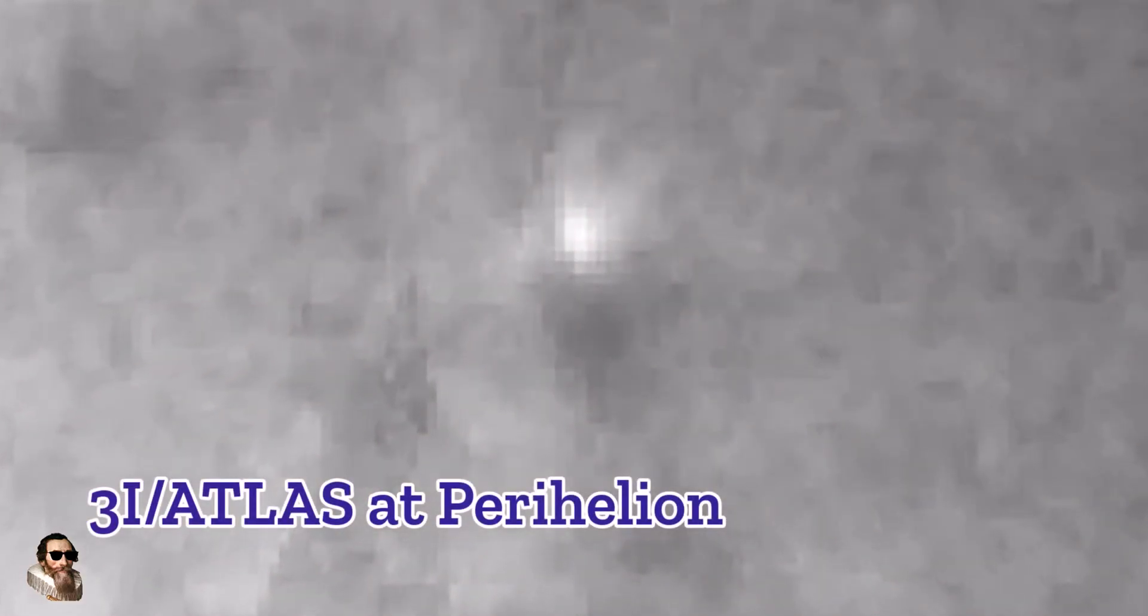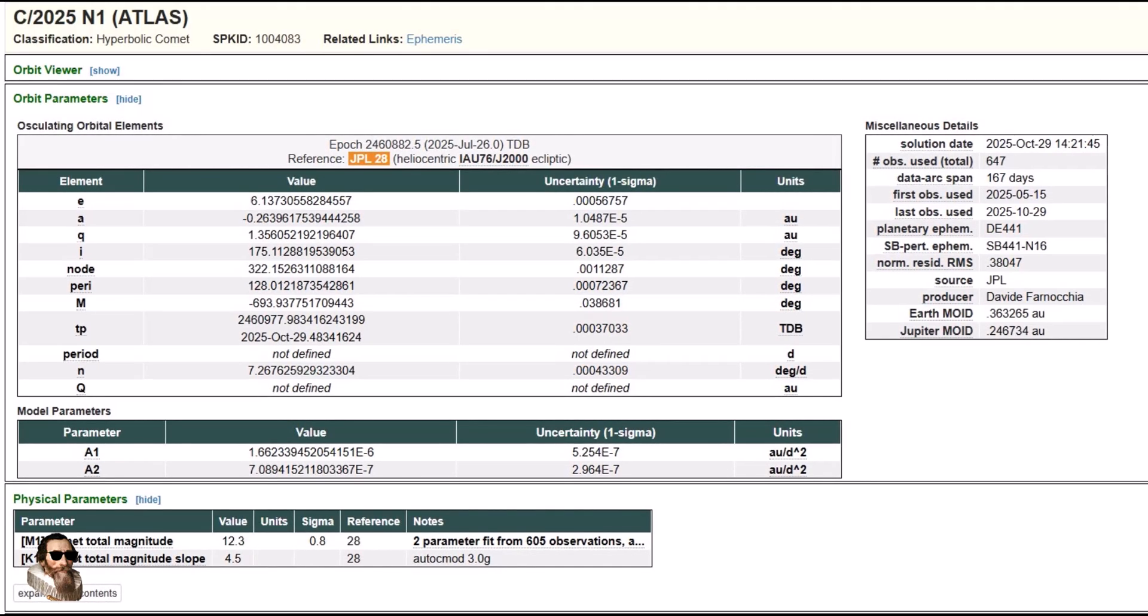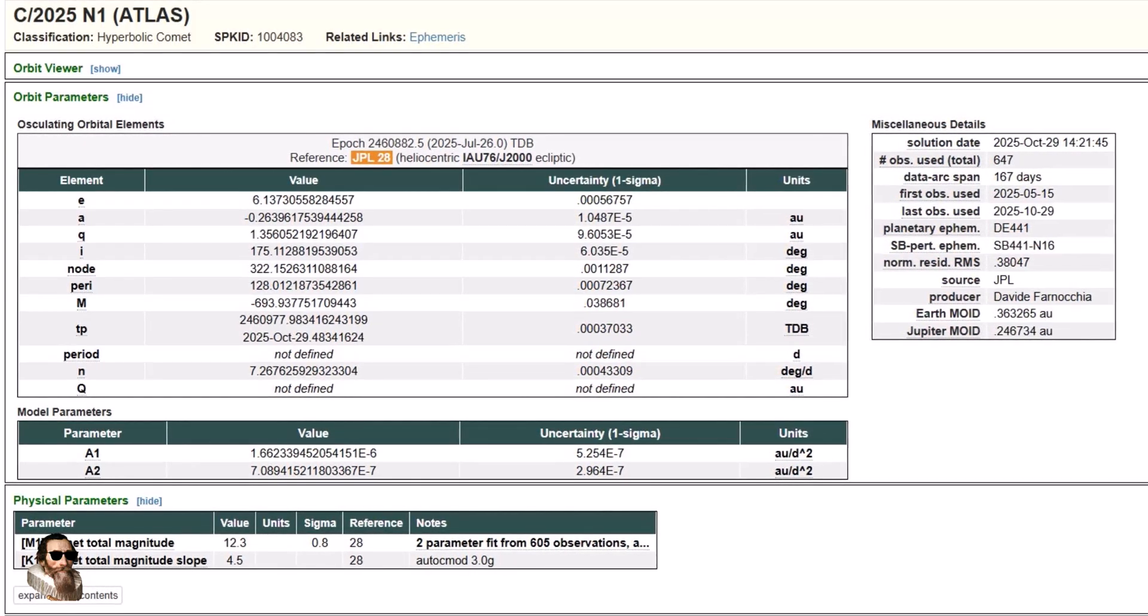3I Atlas behaved uncommonly bright as it approached the Sun, far brighter than typical comets at comparable distances. According to observations from Stereo, Soho and GOIS-19 instruments, its brightness scaled with solar distance to the power of about 75 plus 1, a steeper rise than the norm. And there's also the color puzzle.